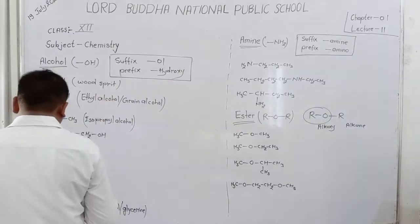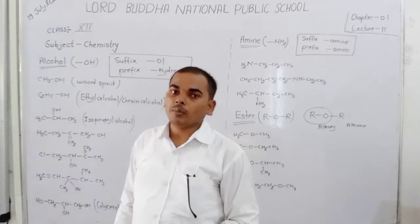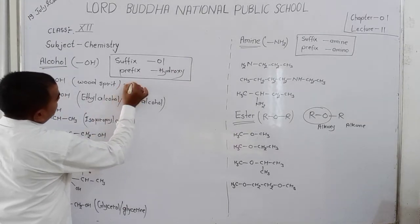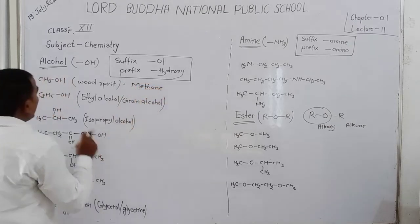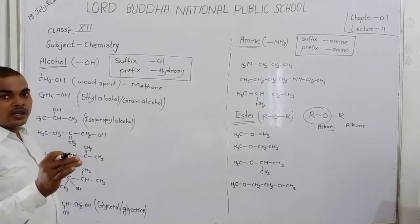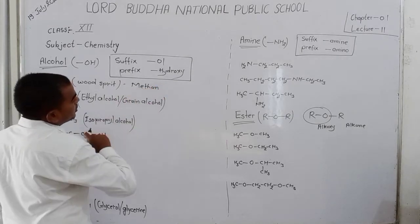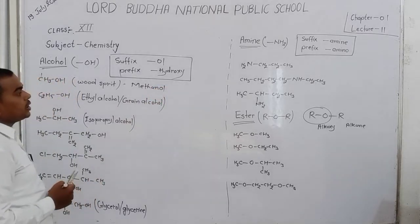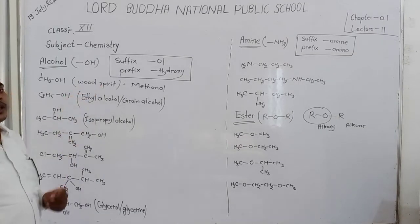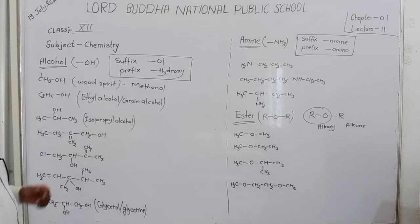For example, CH3OH. In CH3OH, one carbon is present. The name of this compound: for one carbon we write 'methane', and for the OH group we use the suffix '-ol' at the first position. It is not necessary to write 'first position'. So we add '-ol' to methane, removing the final 'e', giving the name Methanol. The common name of methanol is known as Wood Spirit, because it is obtained by the distillation of wood.